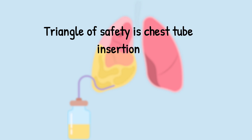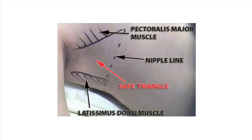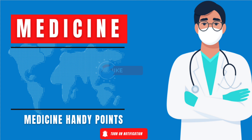The triangle of safety, as discussed in primary pneumothorax, is used for chest tube insertion. The chest tube can be a silicone or pigtail chest tube — pigtail is preferred because it causes less damage. This triangle is located between the anterior and posterior axillary folds at the nipple line in the axilla, and is the safe area to insert the chest tube.